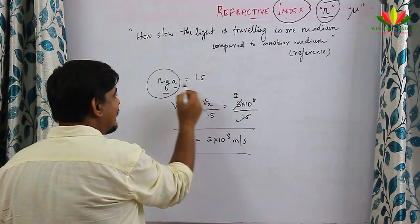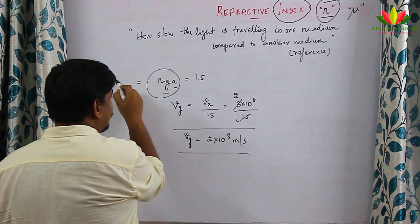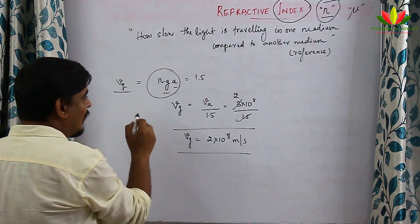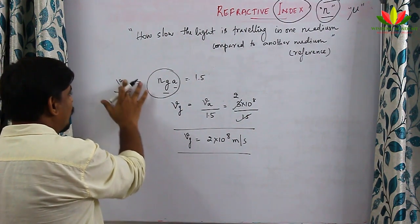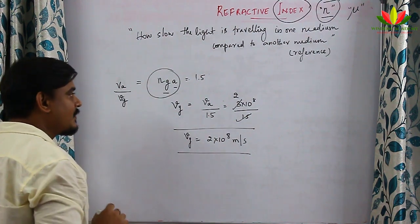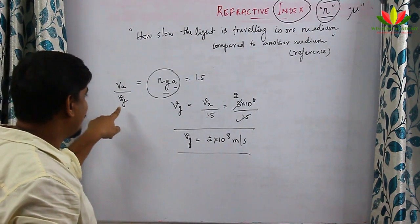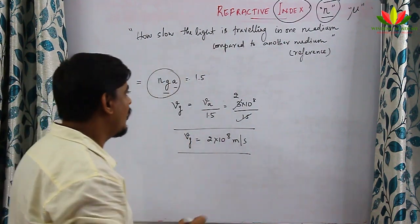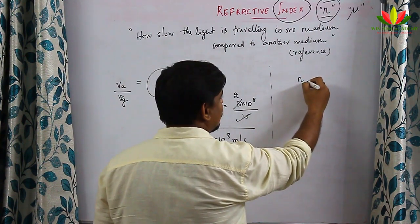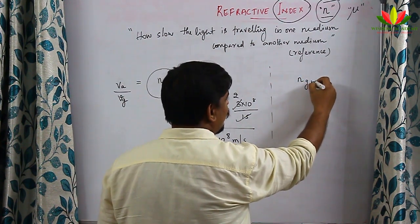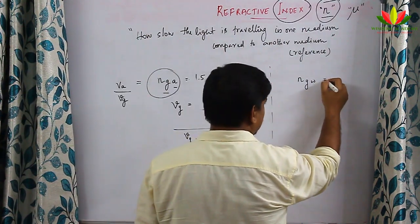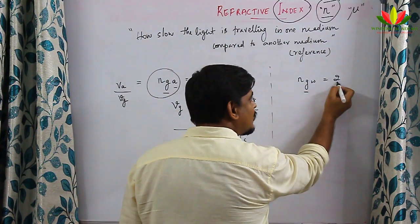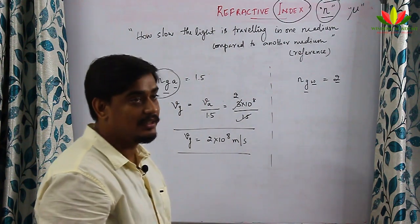Refractive index of glass with respect to air is written as velocity of light in air divided by velocity of light in glass. Similarly, if I write n_gw = 2, it means velocity of light in glass is 2 times slower than velocity of light in water, so velocity in glass = velocity in water / 2.